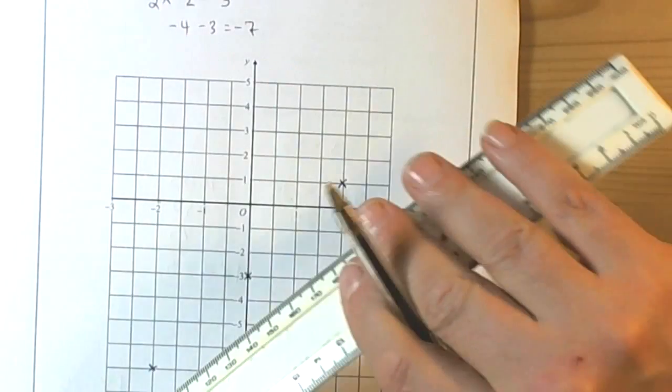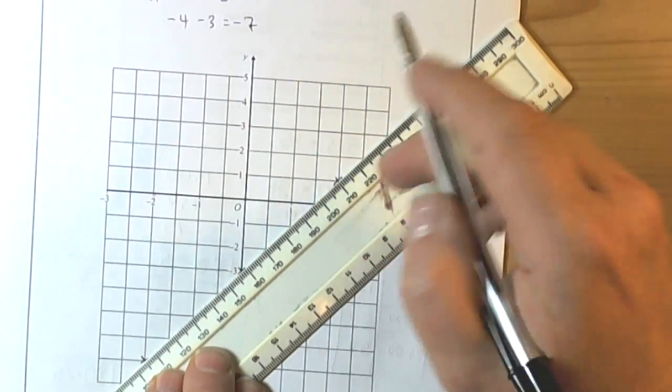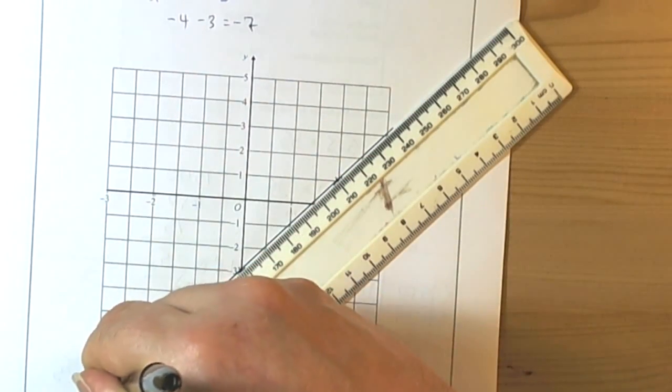So we get our ruler here and very carefully line up all our crosses. If it works, then we draw the line all the way across the graph.